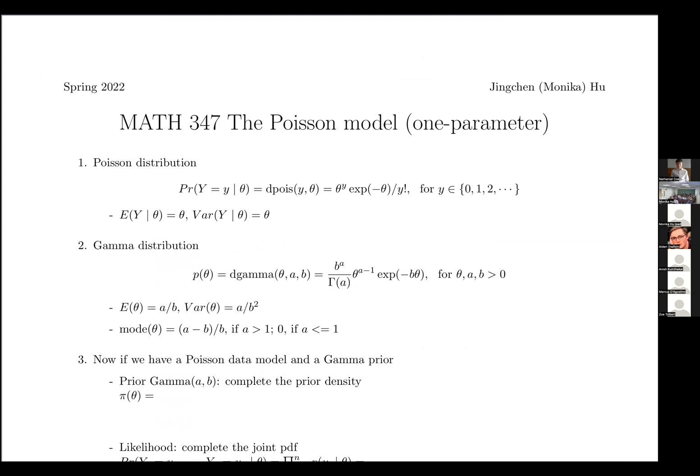Poisson distribution, if you learned it in the past, is very useful to model count variables, and we have a one parameter model, which is the theta over here. So we have the discrete density function over here for the Poisson.